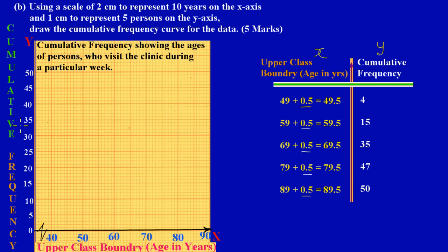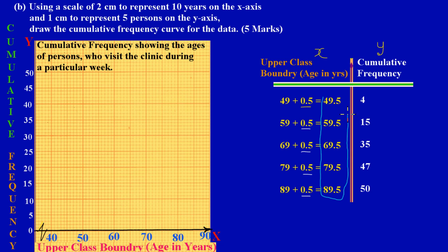Now my axes are properly labeled. I am plotting upper class boundaries as my x-values, as explained in the previous lesson, and plotting those against my cumulative frequency as my y-values. Let's quickly identify the points - I'm focusing on the upper class boundary values, which are the important values we'll be looking at.